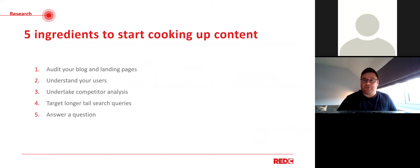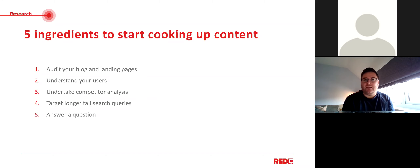Step one: research. Before you begin writing any content, there are a couple of things we always try to get our clients to understand. These are the five things we always consider ourselves when doing it internally. You could write as many blog posts as you want on topics you think your audience are going to be interested in, but ultimately if you don't understand what your users are interested in or engaging with — or what they're engaging with on competitor sites — you're just putting blog content out into the ether, which may not be as effective as it could be. Once you've got a better understanding of all of these, you'll be able to produce content that's more relevant to the audience, with a better chance of ranking higher up in Google.